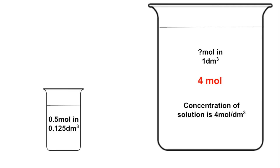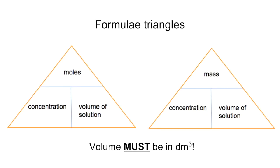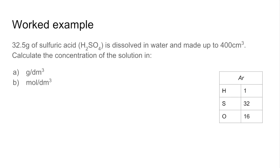Often the volumes won't be as straightforward as that, so there's a handy set of formula triangles we can use. To find the concentration you divide moles by volume, or divide mass by volume. One word of caution: the volume must always be in cubic decimetres.